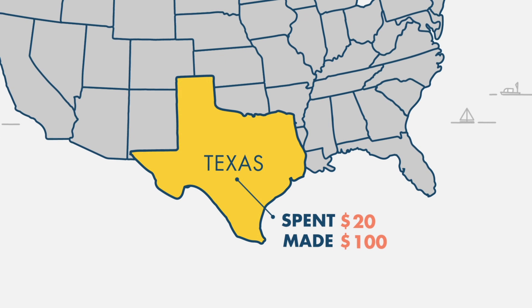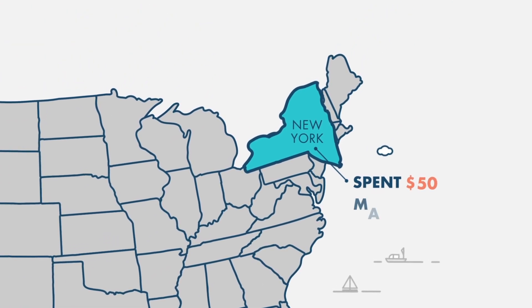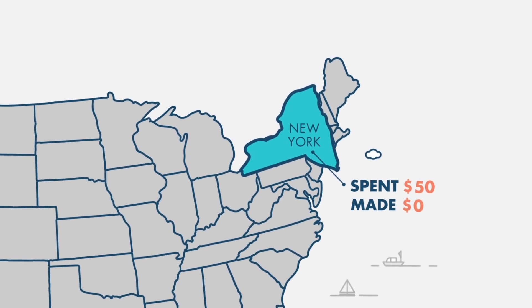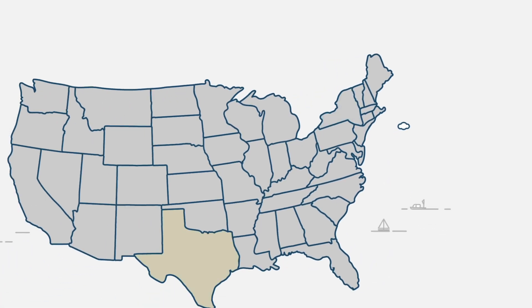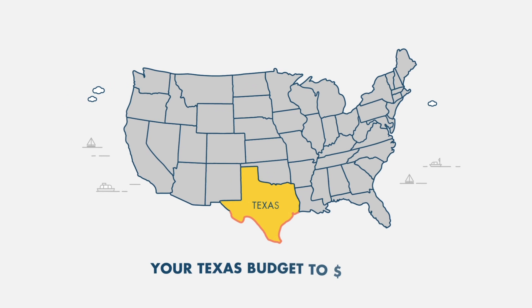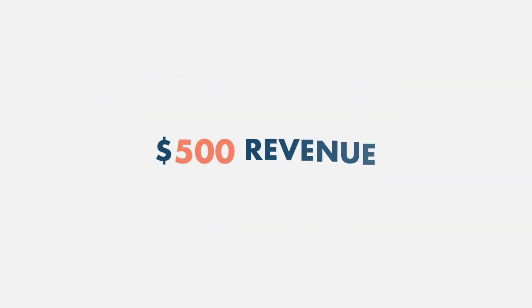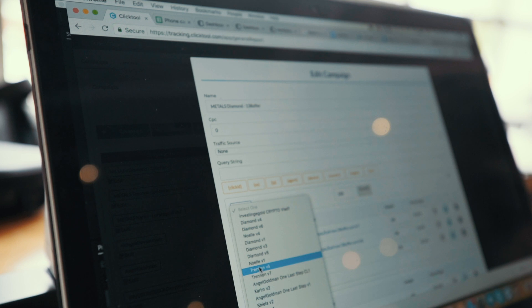You're also spending $50 in New York and none of your sales are coming from New York. ClickTool allows you to get insights such as these and helps you redirect your budget and distribute it properly. So in this case you can increase your Texas budget to $100 and now your campaign would be generating $500 a day in revenue with the same spend. This is just a simple example of how ClickTool can take a campaign that's just okay and turn it into a home run.